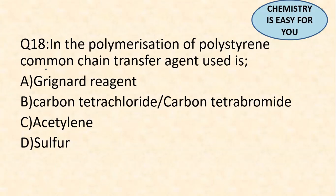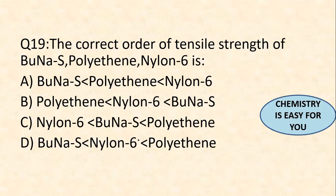Question 18: in the polymerization of polystyrene, the common chain transfer agent (CTA) is carbon tetrachloride or carbon tetrabromide — CCl₄ or CBr₄, generally represented as CX₄. These are the chain transfer agents in the polymerization of polystyrene.